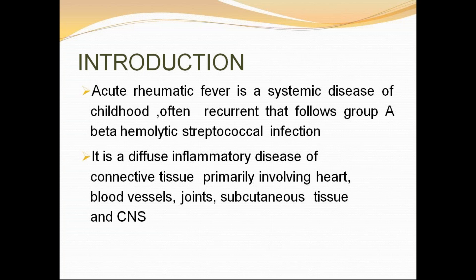Acute rheumatic fever is a systemic disease involving many organs, mainly the heart, and also blood vessels, joints, subcutaneous tissue, and central nervous system. It usually follows group A beta-hemolytic streptococcal infection. Importantly, it is a non-suppurative complication following pharyngitis rather than skin infection.